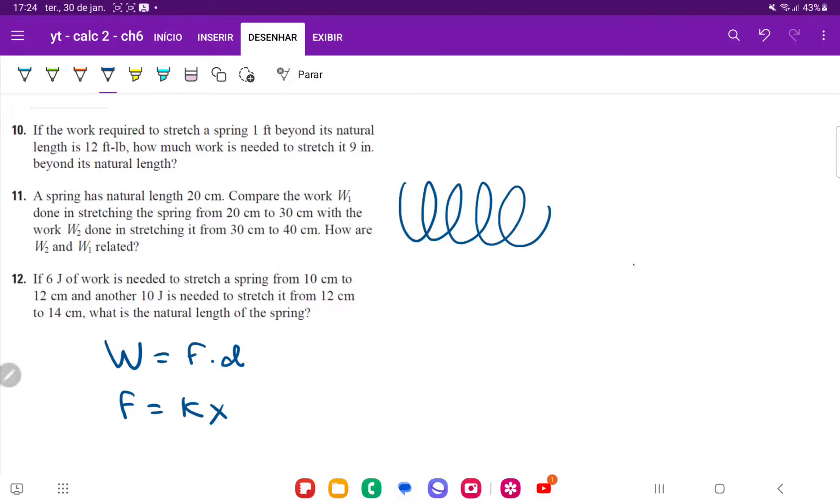So for number 10, we're given a spring where the work to stretch it out from its natural resting state, so this is the natural length, and if we were to stretch it out one additional foot beyond, it would require a work of 12 feet times pounds. So what that means for work is that work is a measure of force applied through a distance. So you multiply force times distance.